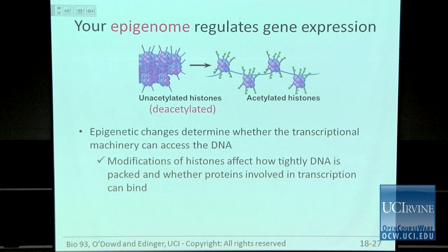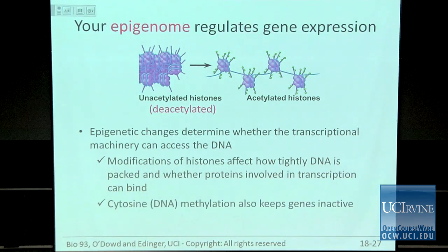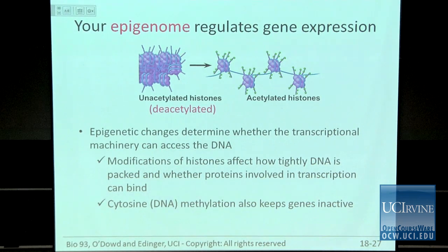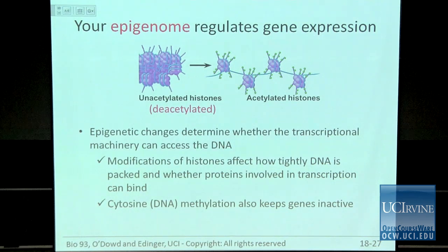Modification of histone tails affects how tightly the DNA is packed and whether the proteins needed for transcription can access the DNA. Another thing mentioned in our book is that you can methylate the cytosine residues in DNA. Methylated cytosines are still cytosine, so the sequence hasn't been changed. But the DNA becomes less active because it causes things like histone deacetylases to be recruited when there's a lot of methylated cytosines.